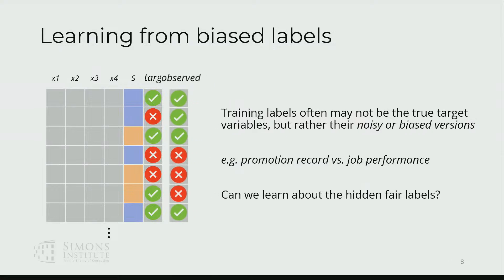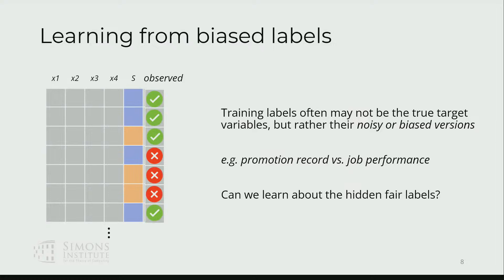So the setting is, given that we just see the observed historical promotion record, can we infer something about the hidden true target variable, which in this case was actually a person's job performance? We're going to do this by explicitly encoding the fact that what we're seeing in the data, the labels that we're seeing, are biased versions of the true target that is actually hidden.